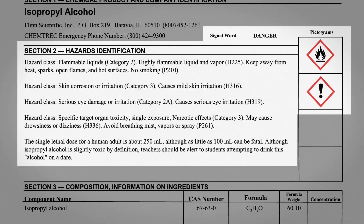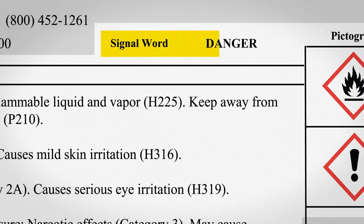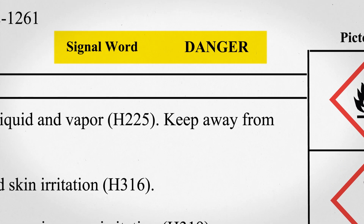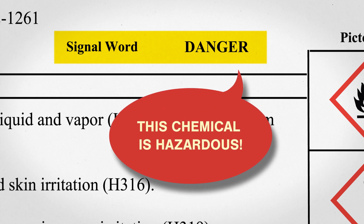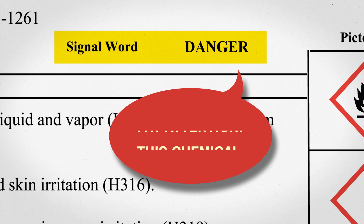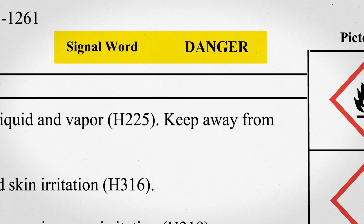Section 2 identifies hazards. Hazards can be identified in three different ways. The first is called a signal word, which serves as a kind of first alert — "Danger" means this chemical is hazardous. Chemicals that are less hazardous may use the word "warning" instead of "danger," while non-hazardous chemicals won't have a signal word at all.